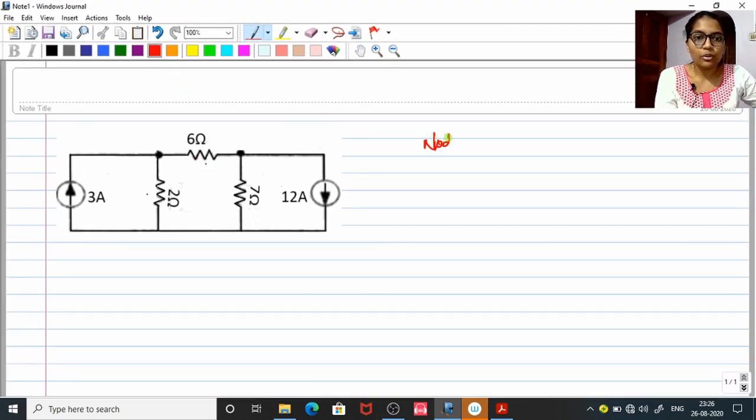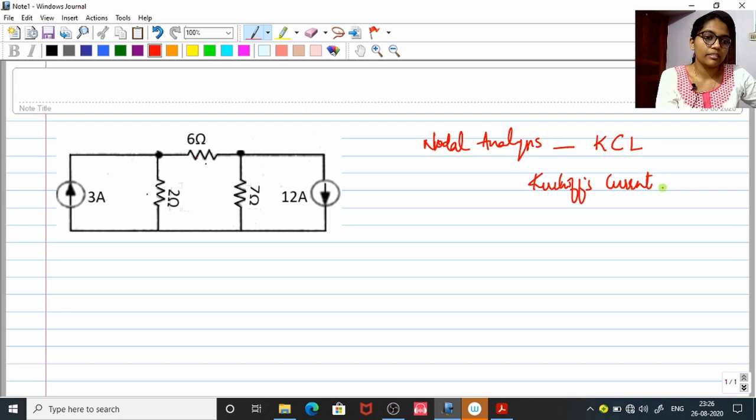We have to go for nodal analysis and nodal analysis makes use of the law KCL, Kirchhoff's current law. And it says that at a node point, if many branches are meeting up and current here is I1, I2, I3.